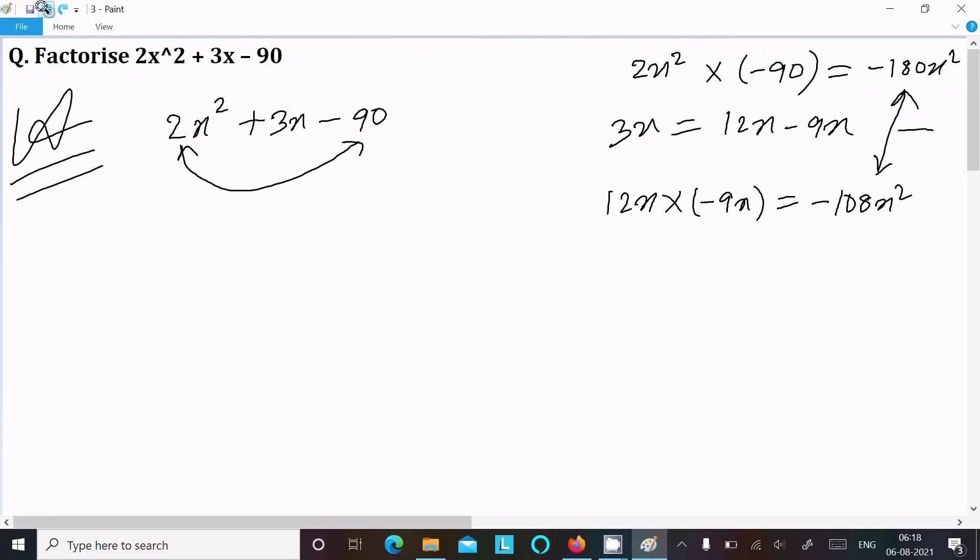These two are again not the same, not equal, so we cannot take that one. After that, this time try with another combination. 3x we can write as 15x